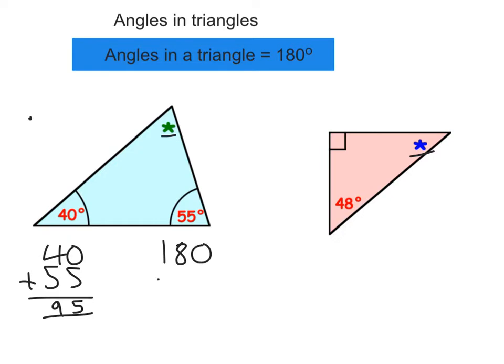So if I take them away from 180, that's going to tell me what the green star is. So I need to borrow. 10 take away 5 is 5. 7 take away 9 can't do, so I need to borrow again. 17 take away 9 is 8. And 0 take away 0 is nothing. So green star is 85 degrees.